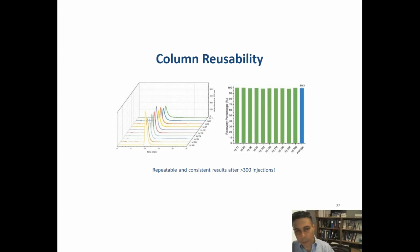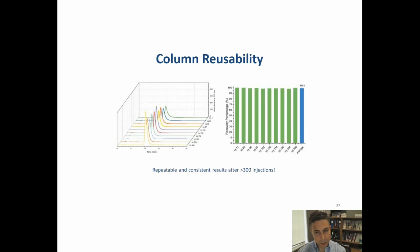Column reusability was also evaluated. After over 300 injections, the column remained robust. The nucleotide binding site ligand does not elute or leach off the resin — unlike protein A or protein G columns, this column is practically indestructible. Store it in 20% ethanol in the fridge and it will last indefinitely.